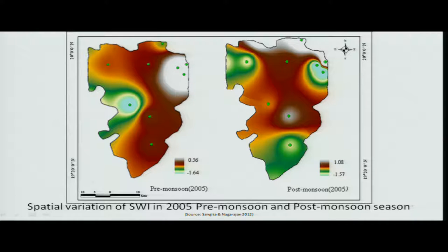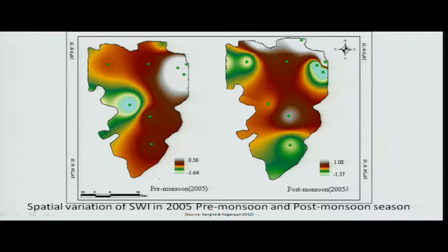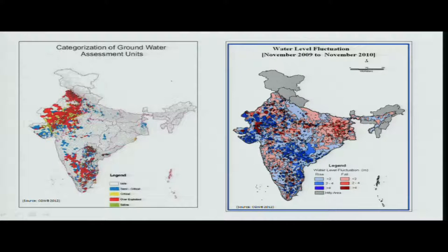Comparing pre-monsoon and post-monsoon periods tells us how much improvement has taken place after the monsoon or after rainfall. This is another way of understanding groundwater availability in an area — it shows the variations contributed by the rainfall event.